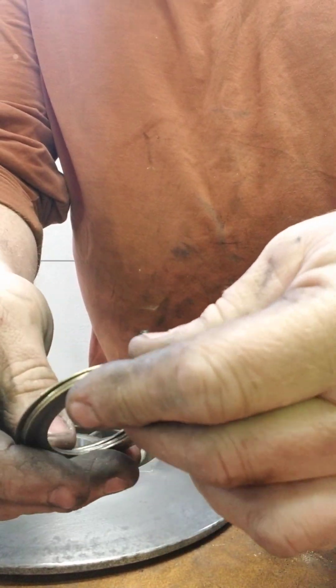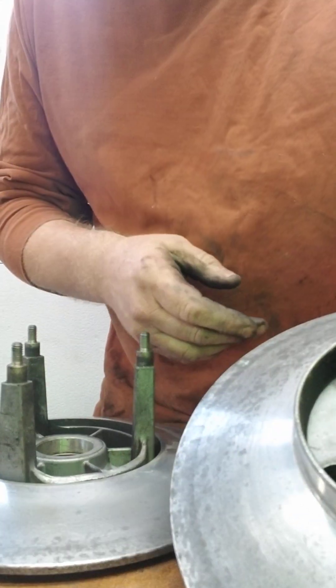These are spacing shims for proper belt deflection. Sometimes you'll have to put it together a couple times to make sure you have the proper deflection.